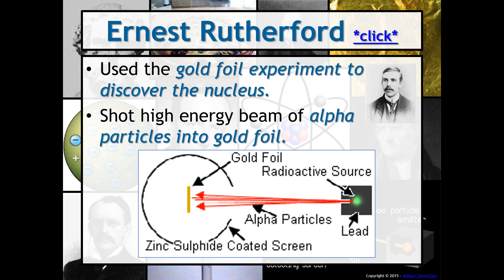This is an example of what his setup looked like. So you have a radioactive source inside a lead box that has a hole in it. And these particles, these alpha particles shot into gold foil. And then this zinc sulfide coated screen is where you saw the alpha particles, where they went when they went through the gold foil.